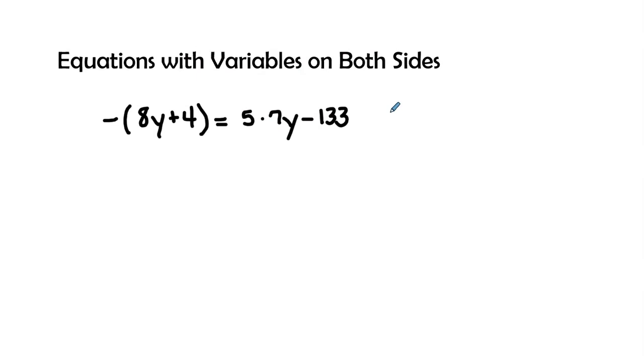In this video, we are going to be solving equations with variables on both sides. In this first example, we have negative times the quantity of 8y plus 4 equals 5 times 7y minus 133.